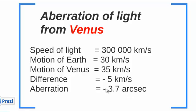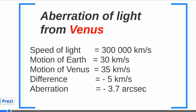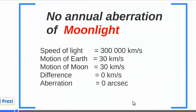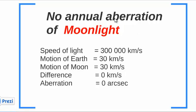It has a minus sign because the aberration is in the opposite direction from the distant stars. For the Moon, we don't have any aberration, which we can explain as follows: the motion of the Earth is 30, the Moon goes with the same speed as the Earth — no difference, no aberration.